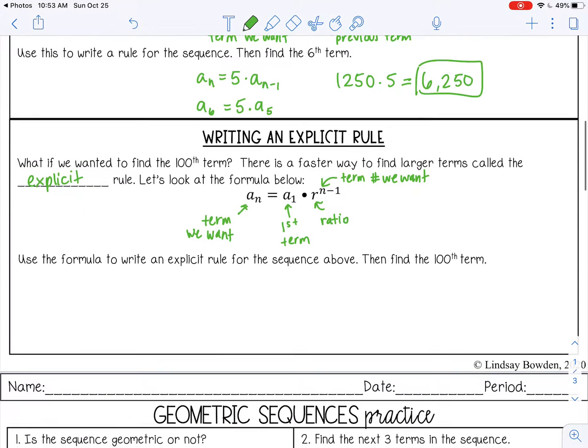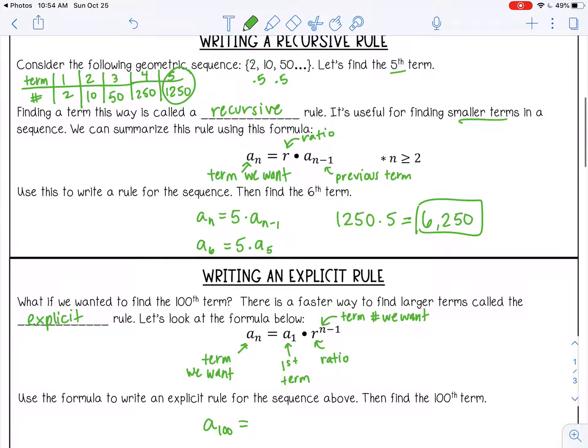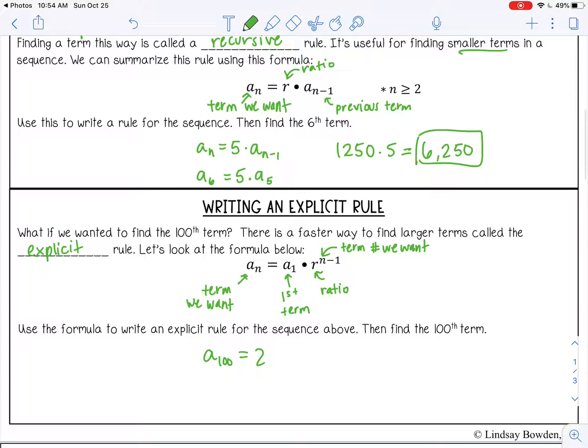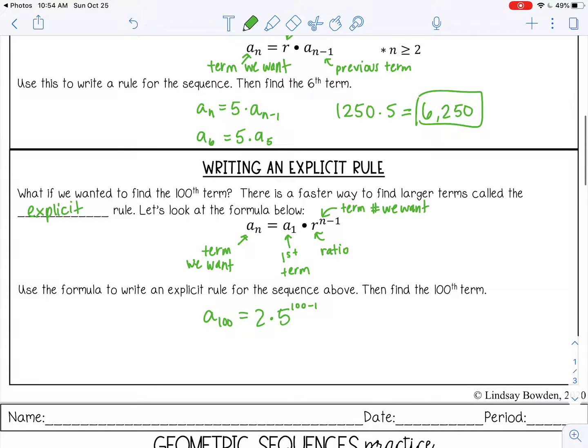So let's use that to write an explicit rule for this sequence. So if we want to find a_100, we want to take the first term, which was 2, times our r, which was 5, to the (n-1) power. So 100 minus 1 power. So that's going to be 2 times 5 to the 99th power. And I'm going to use my calculator for that.